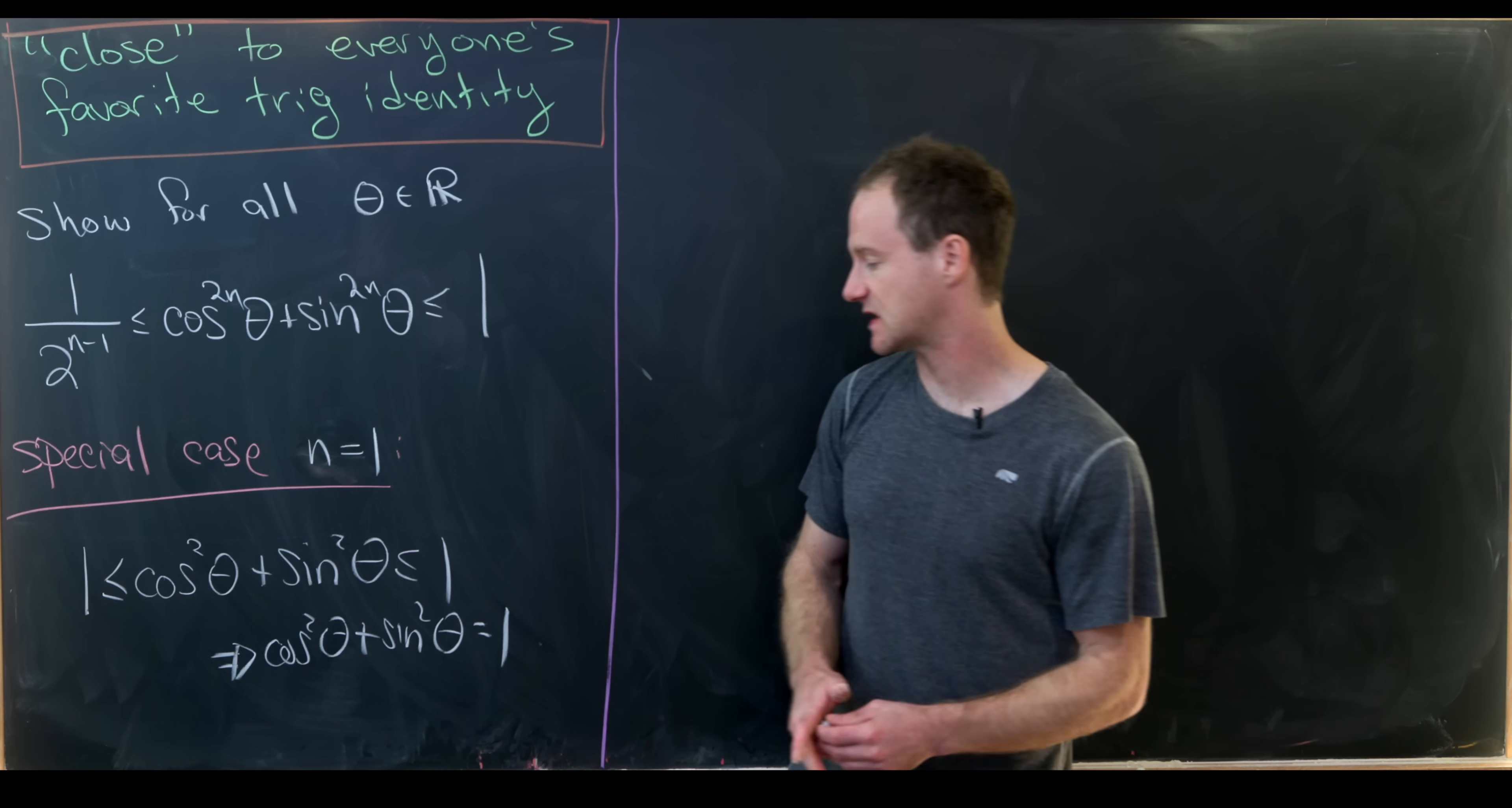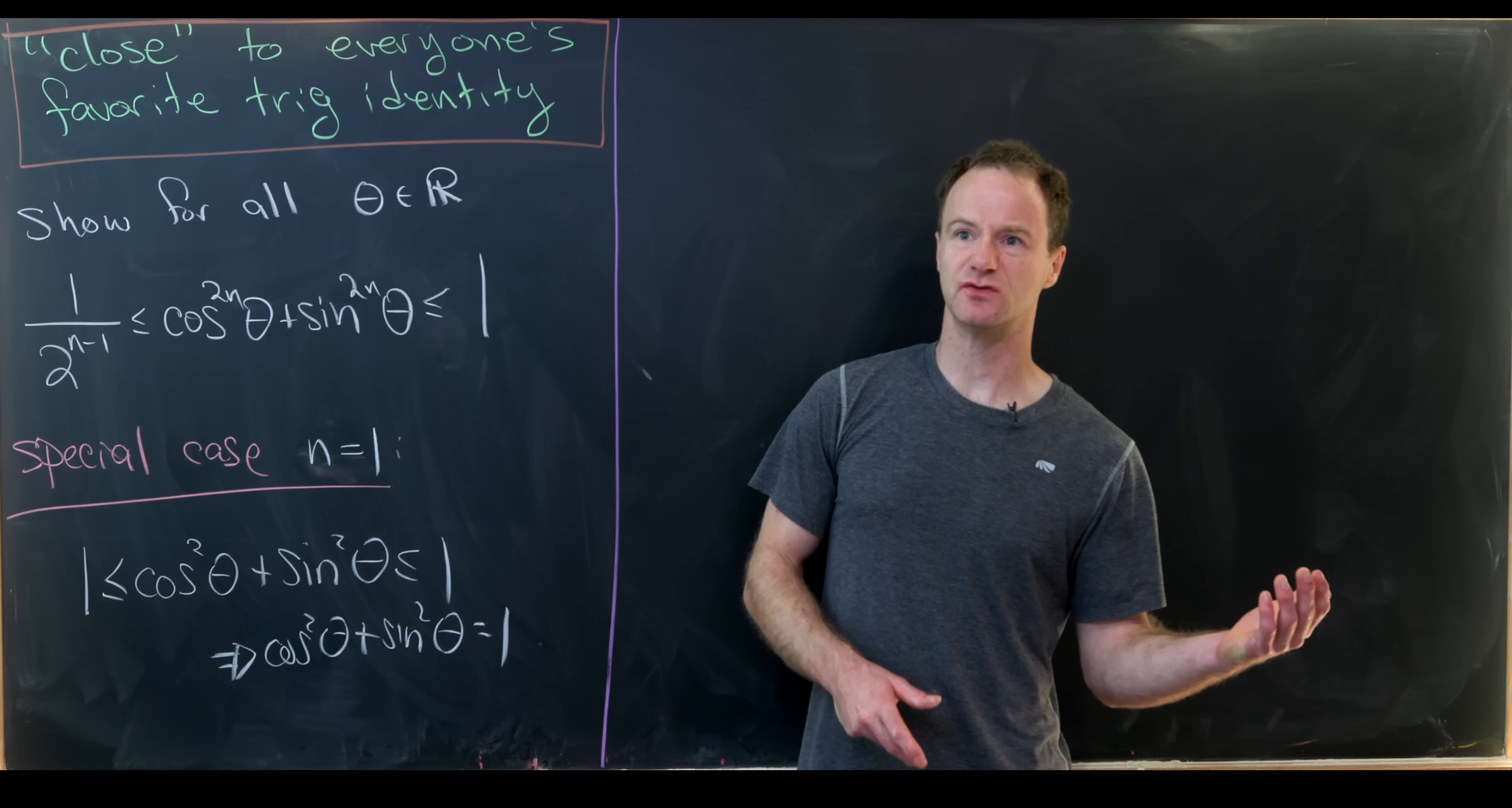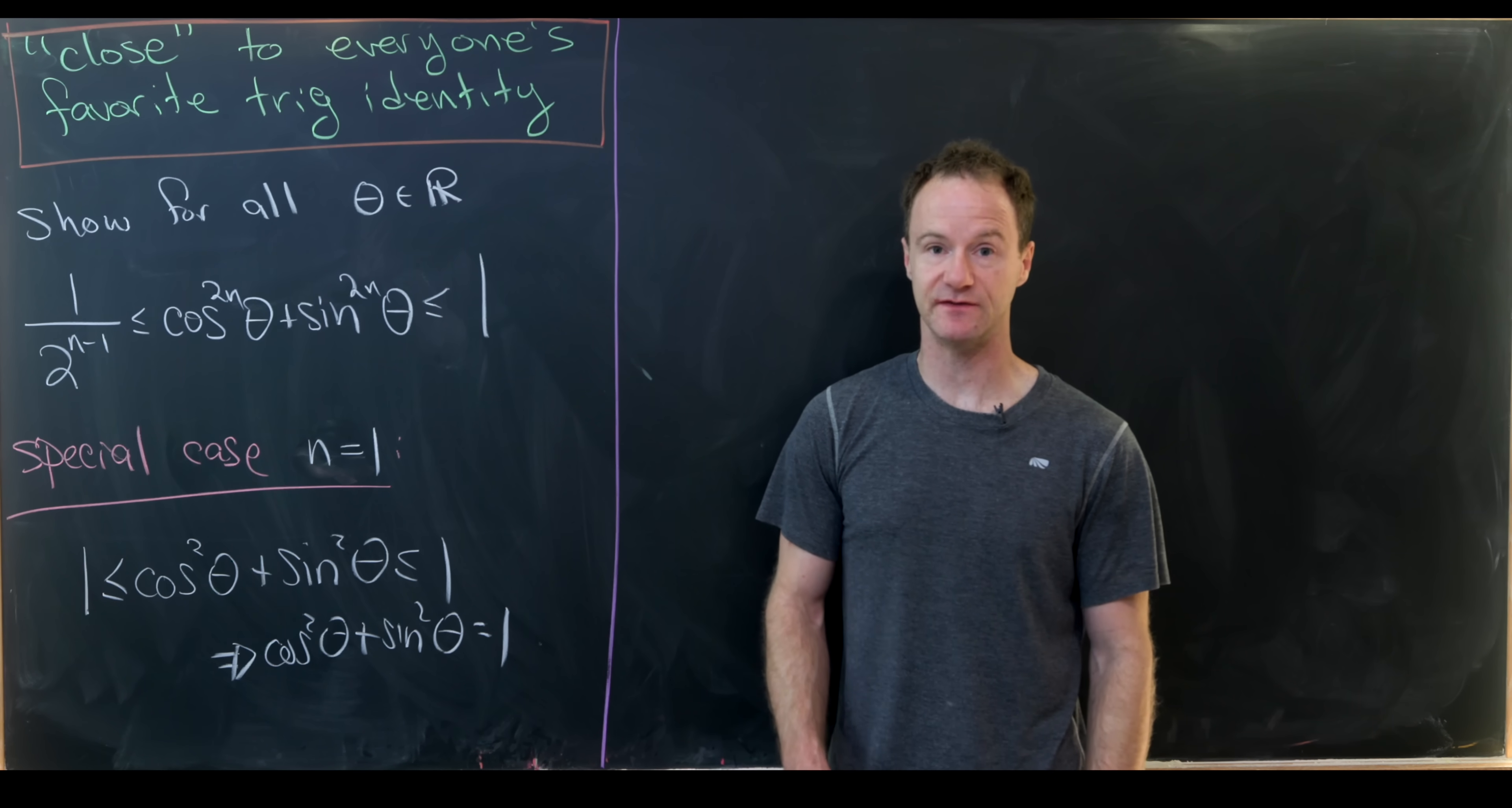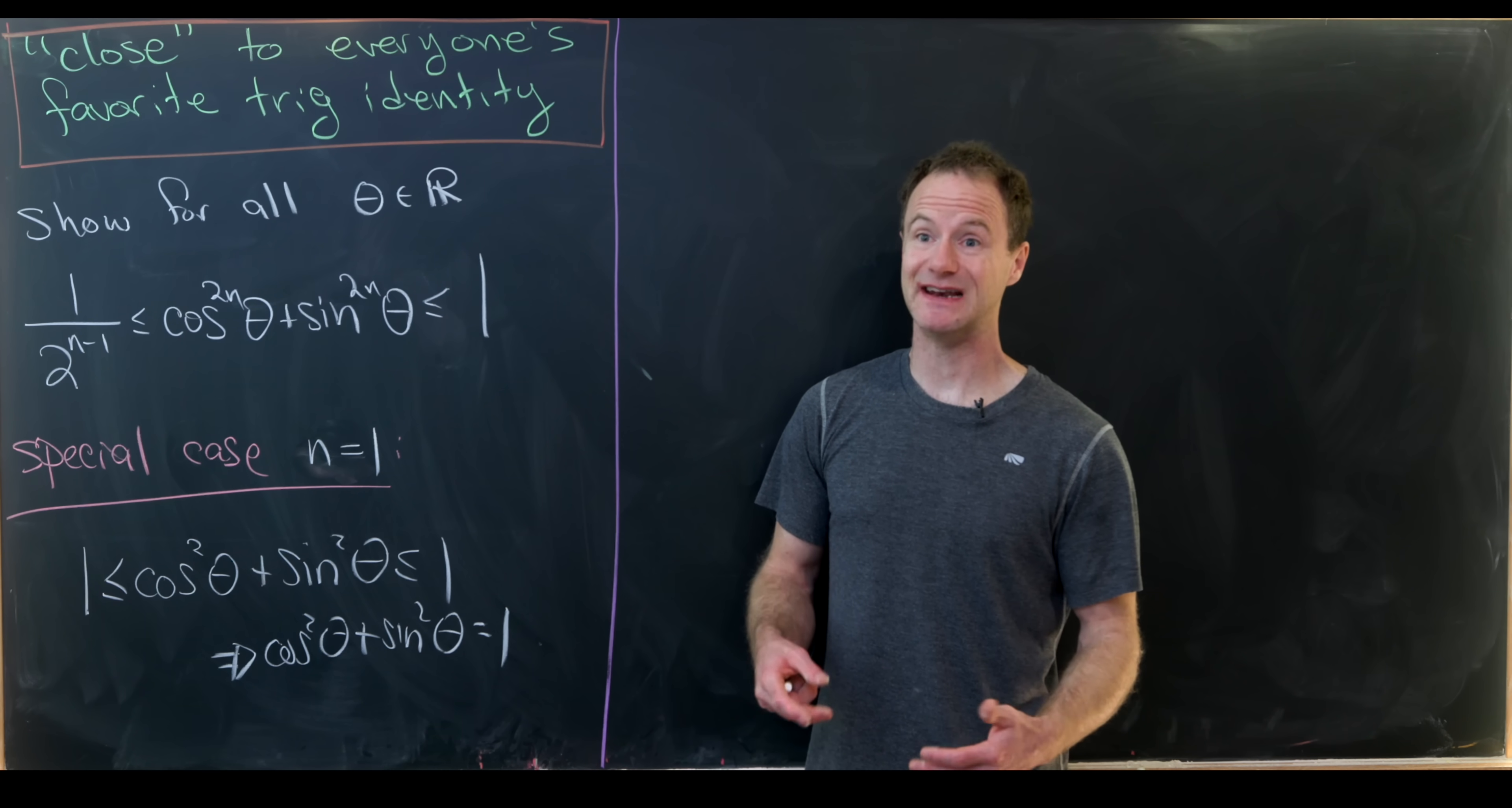That says that cosine squared plus sine squared equals 1. So now I'd like to look at the question: what if we, instead of having a square here, we have an arbitrary even power? And in fact, what we get is not an identity, but an inequality.